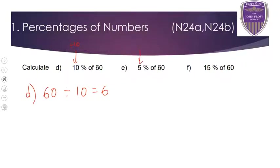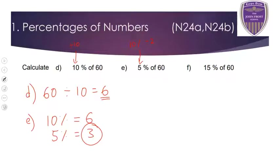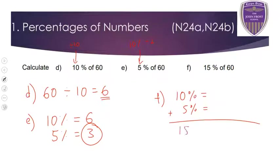For 5%, you can either divide by 20, but most people tend to do 10% divided by 2. For question E, we already know 10% of 60 is 6, so 5% must be 3. For question F, we can add 10% and 5% together to get 15%. We've already worked out 10% is 6 and 5% is 3, so adding those together gives 15% as 9.